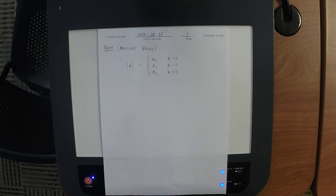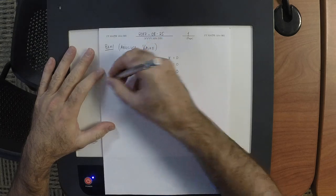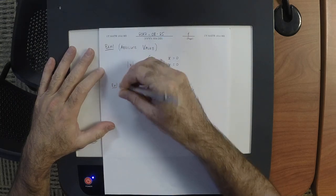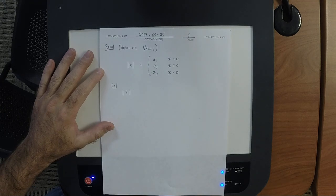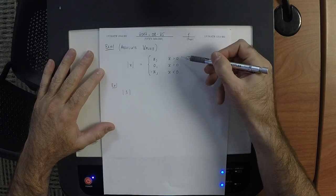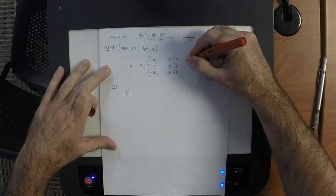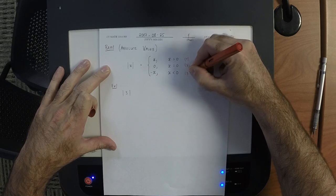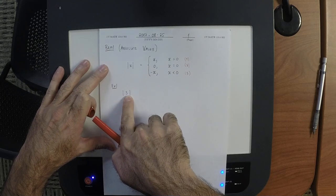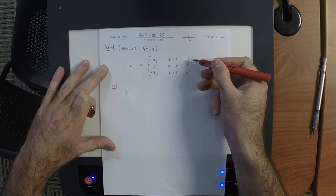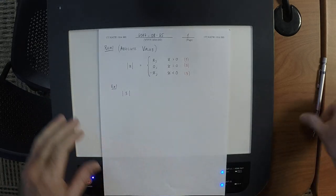Many or even all of you have seen this before, so let's have some examples of its use. What is the absolute value of 3? It's 3. Which clause did we use? Clause one, because clause one is what you do when the input is positive. And the input here is 3, which is positive. So the absolute value of 3 is 3.